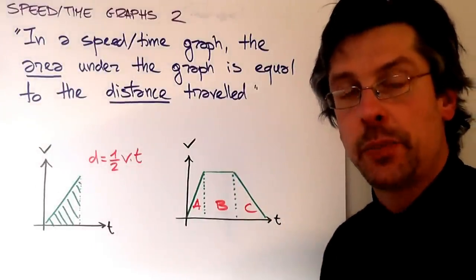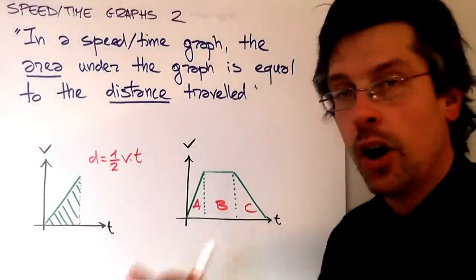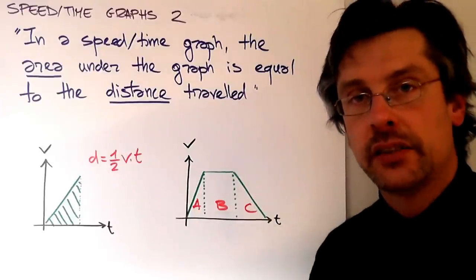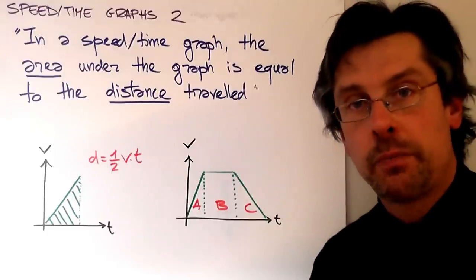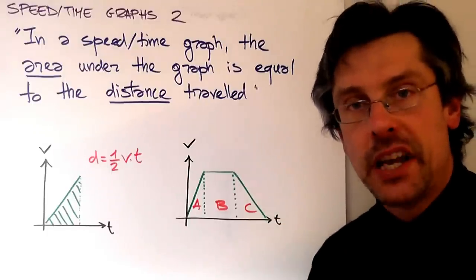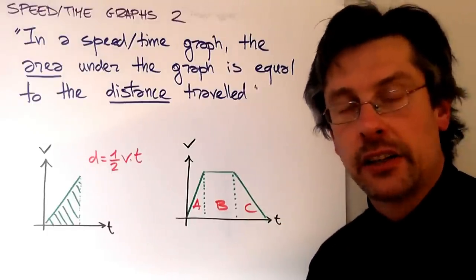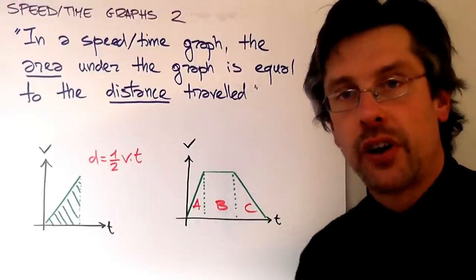So any kind of shape you have, any kind of movement is represented in a speed-time graph. Not only can you find the time traveled, not only can you pinpoint the different speeds the object had at different times, not only can you find the acceleration from the slope of the curves, you can also find the distance by finding the area under the graph.